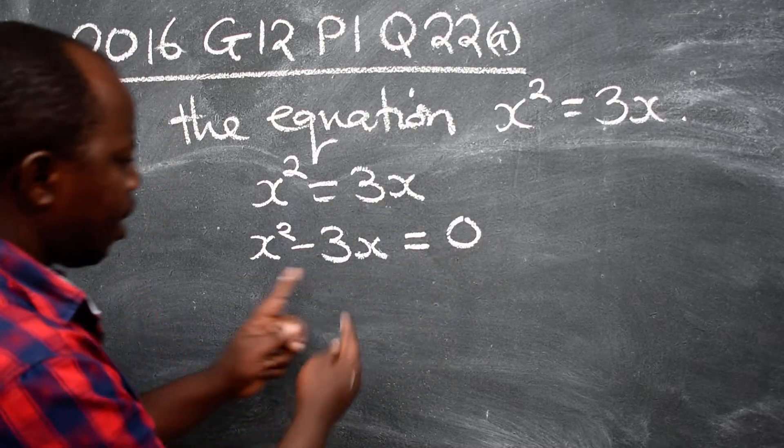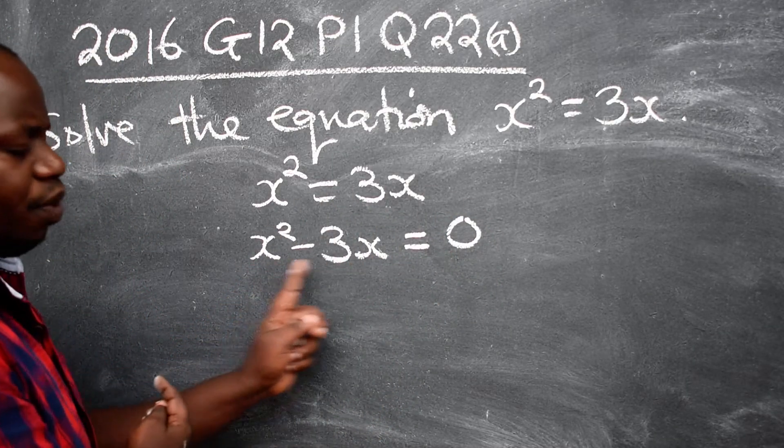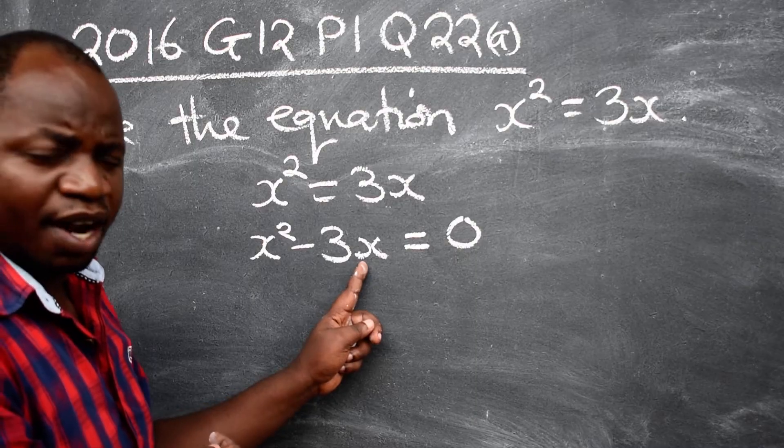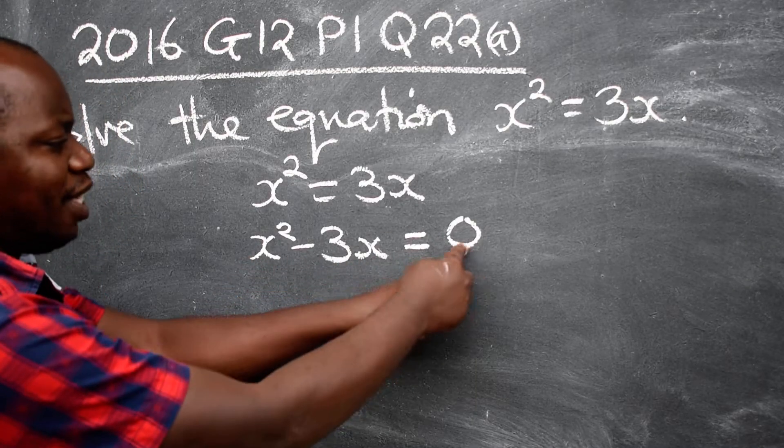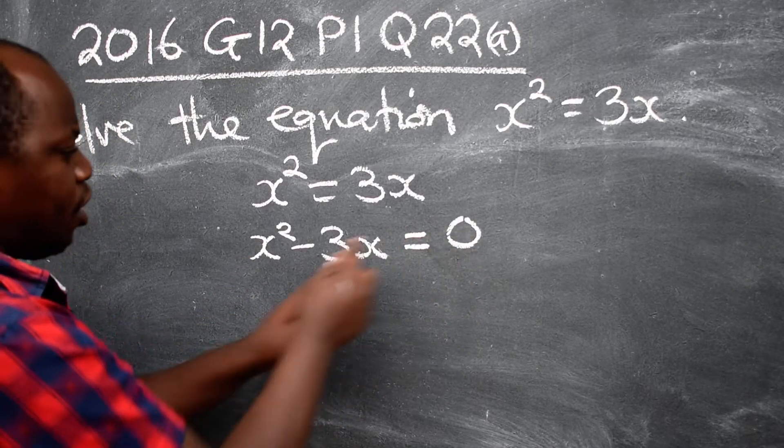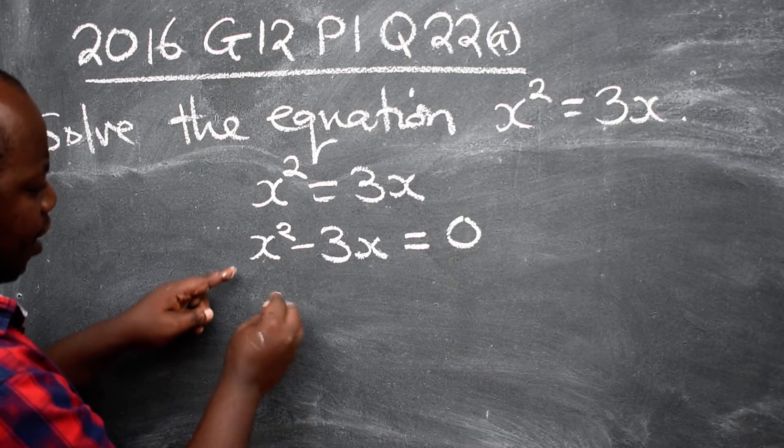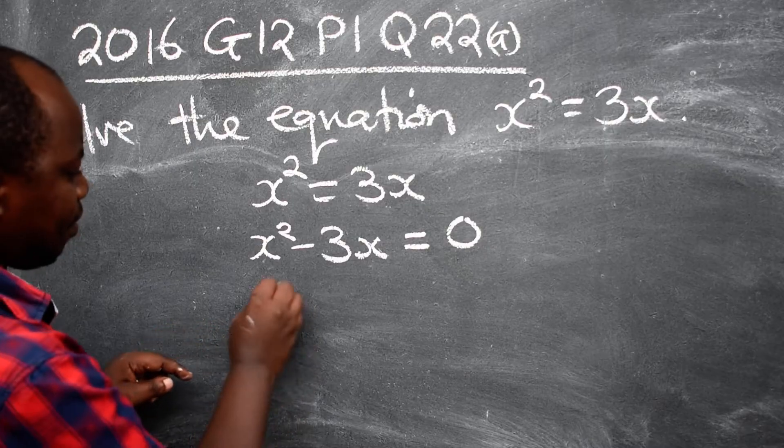Then look at this. What should we do? We need to factorize. Only factorize where it is equated to 0. So when you factorize this, what is common is x.